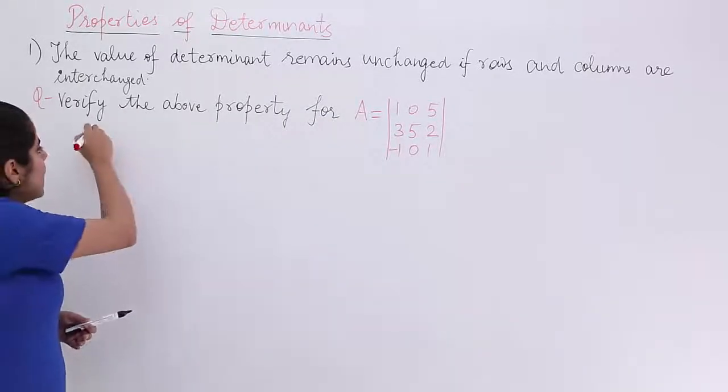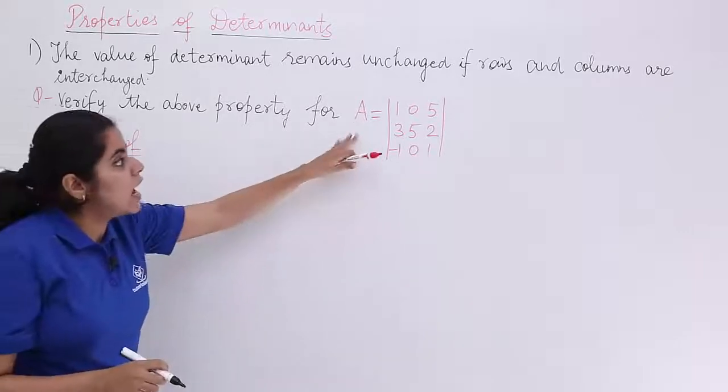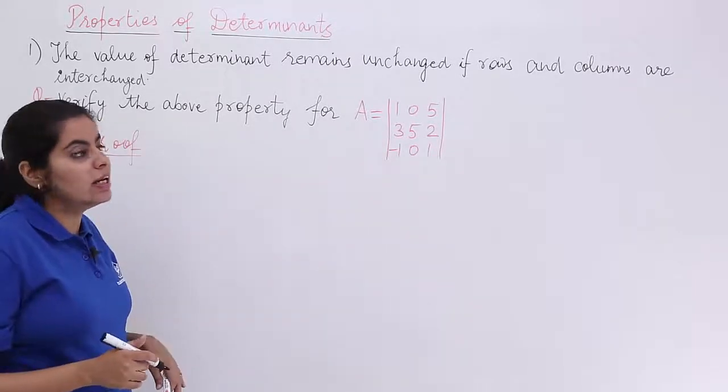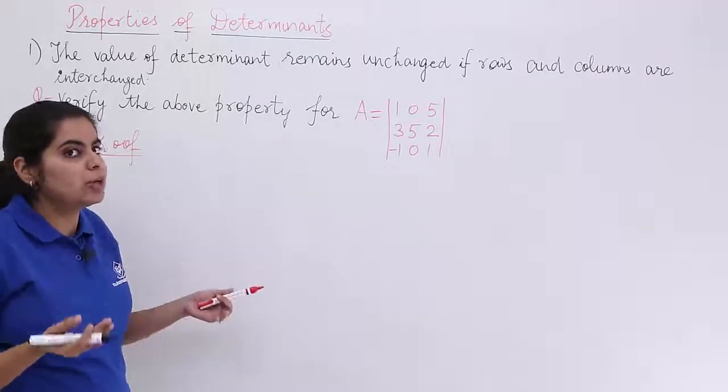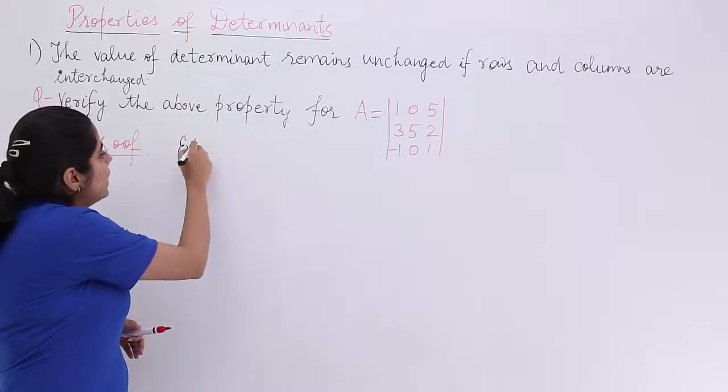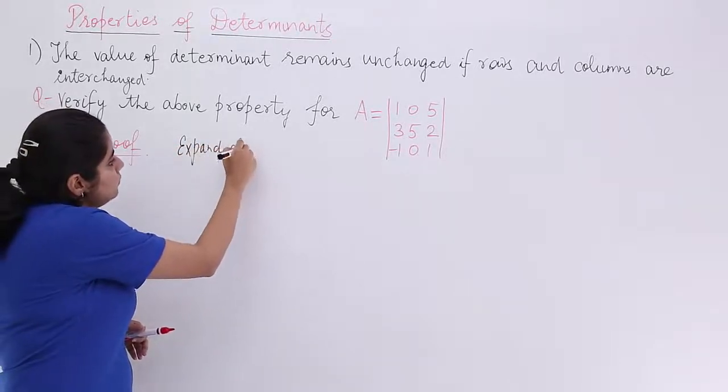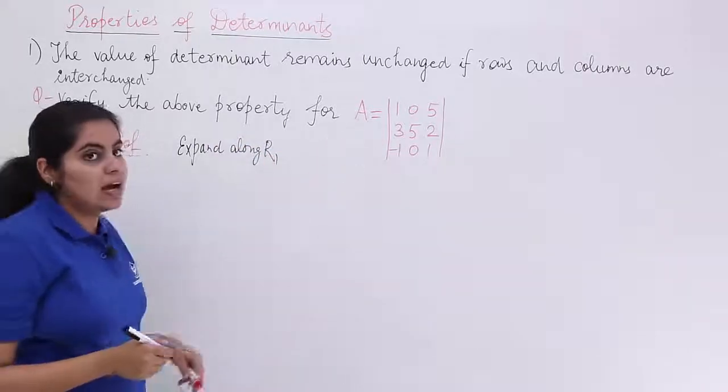The solution would go as the heading of proof, and I would be starting with it. I have A is equal to a determinant. Let's expand it. Expanding along any row or column does not change anything, so let's expand along the first row R1. If that is the case, I have what?